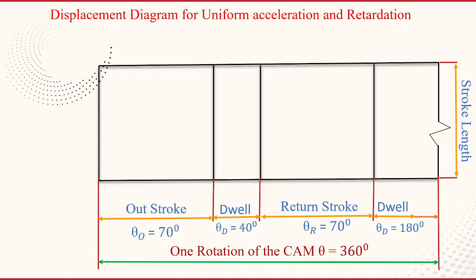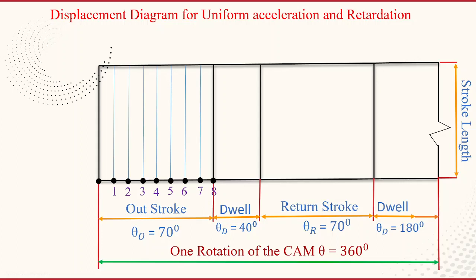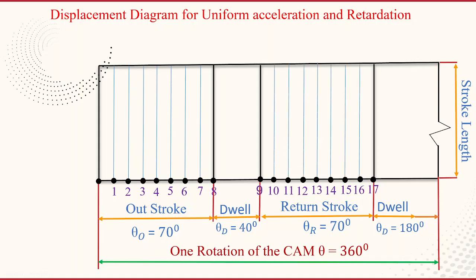The follower moves with uniform acceleration during the outstroke and uniform retardation during the return stroke. To construct the displacement diagram, divide both the outstroke and return stroke into equal number of parts. The outstroke is divided into eight equal parts, numbered accordingly, with vertical lines drawn from each point. The return stroke is similarly divided into eight equal parts with vertical lines.